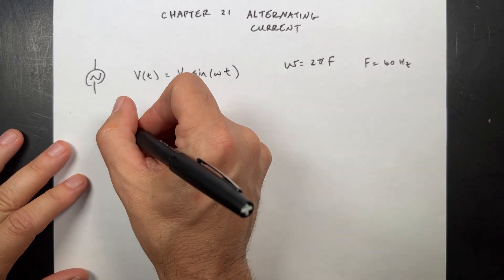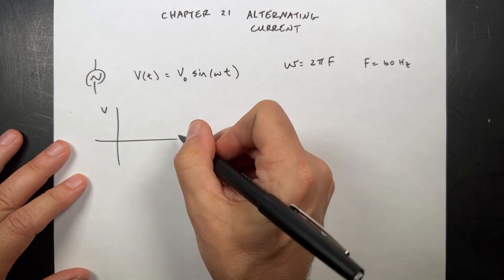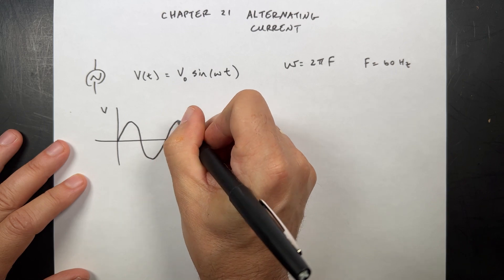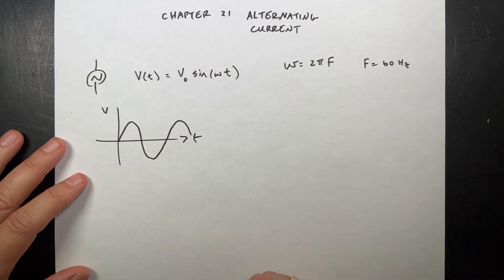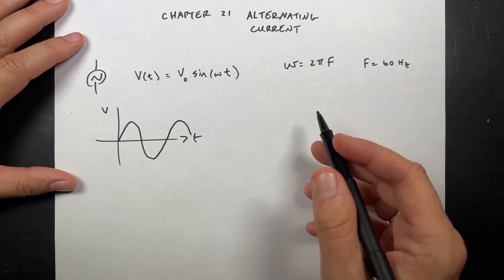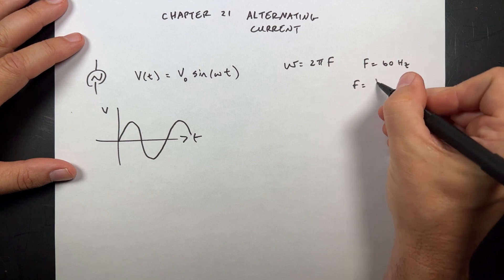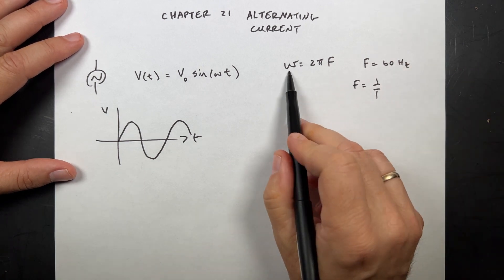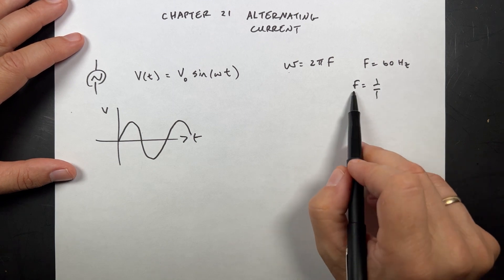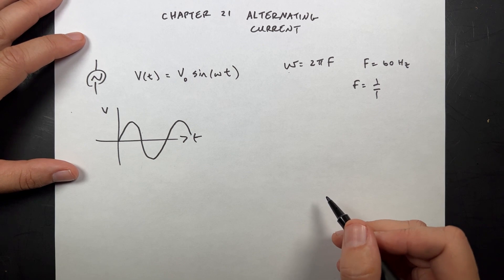This will give you something that looks like this. V as a function of time. I'm going to draw a terrible sine wave. Something like that. And so as time goes on, it goes up and down. We can also say that the frequency is 1 over the period. So don't get these three things confused. This is in radians per second. This is in 1 over seconds or hertz. And T is the time for one complete oscillation in seconds.